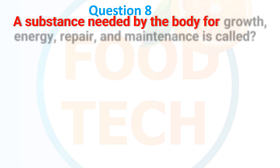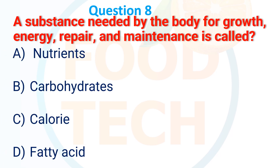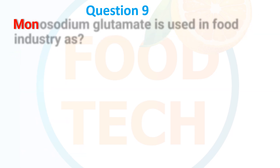Question 8: The substance needed by the body for growth, energy, repair, and maintenance is called — A. Nutrients, B. Carbohydrate, C. Calories, D. Fatty acid. The answer is A. Nutrients.